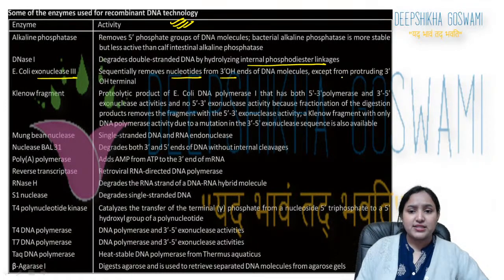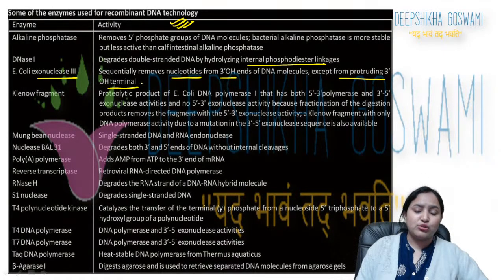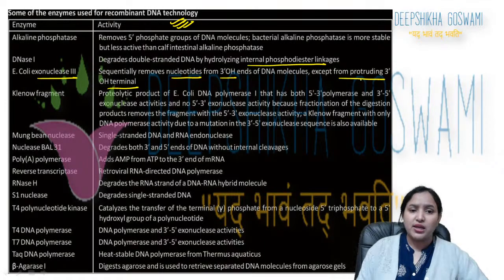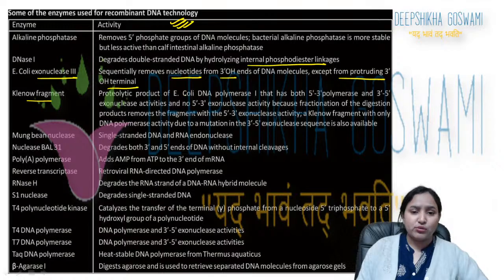Exonuclease III does not remove from protruding 3'-OH terminals — it does not act on blunt ends or protruding ends. The Klenow fragment is a proteolytic product of E. coli DNA Polymerase I.